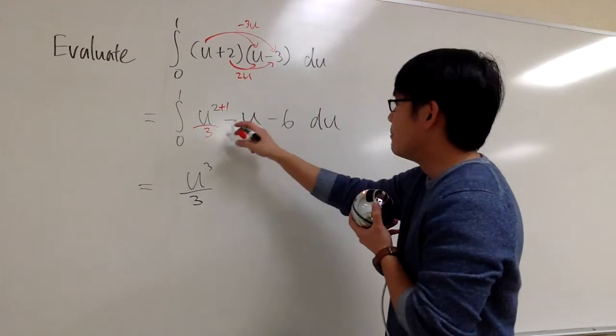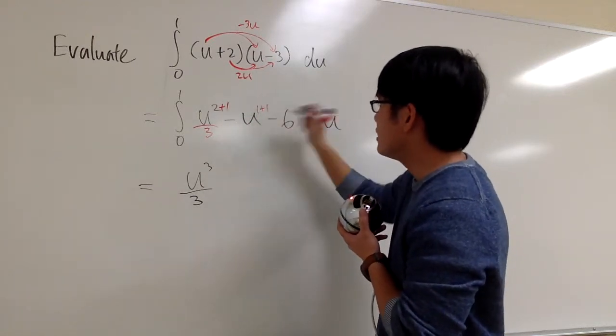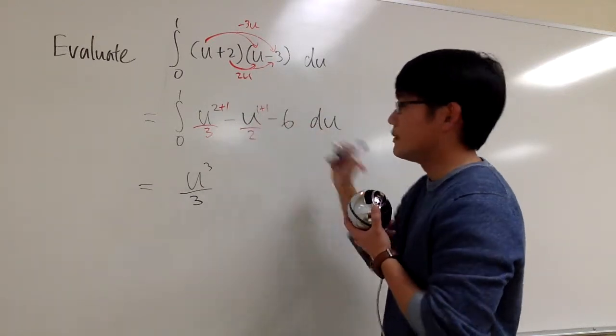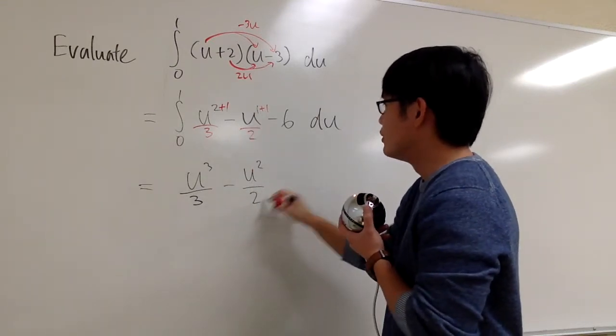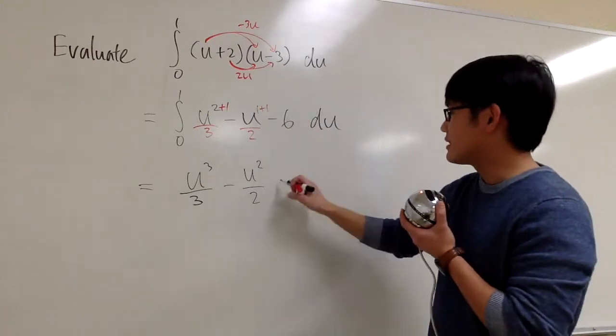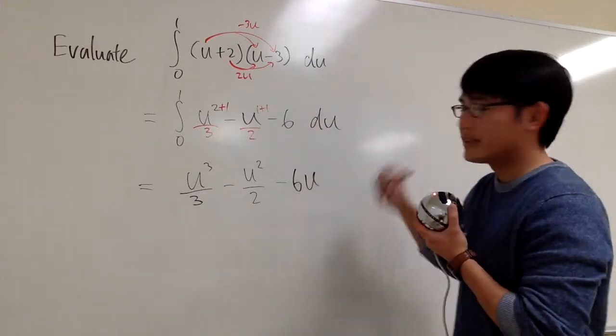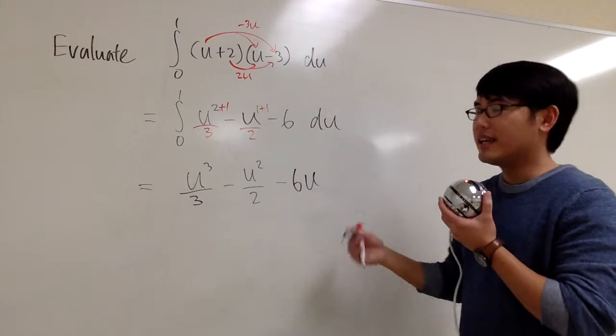So we have u to the third power over 3. Next one, minus u to the first power, I add 1 to the exponent, 1 plus 1 is 2, so divided by 2, we have minus u squared over 2. And this one, minus 6, I just need to attach a u on the side. That's it. That's the anti-derivative for that.